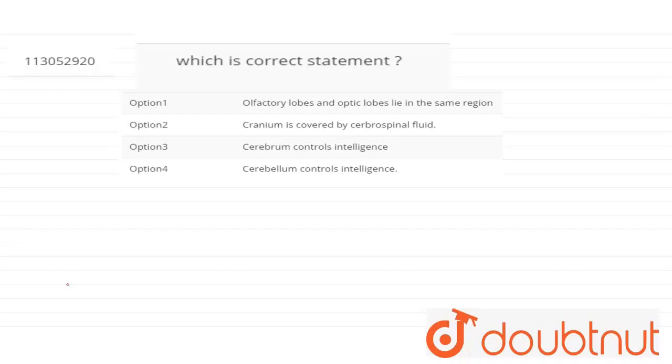So this question needs very deep knowledge of various parts of brain. First of all, we would analyze option number 1. Olfactory lobes and optic lobes lie in the same region. This question is asking whether these two lobes are present in the same location. This statement is false because olfactory lobe is present in the forebrain region.